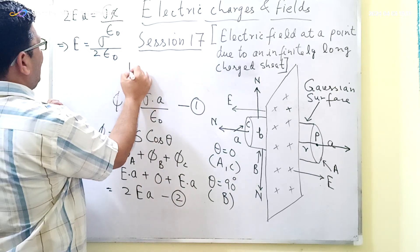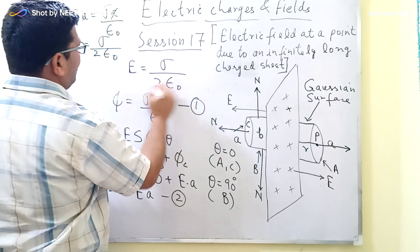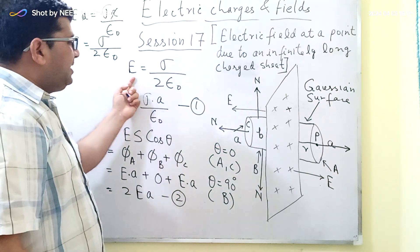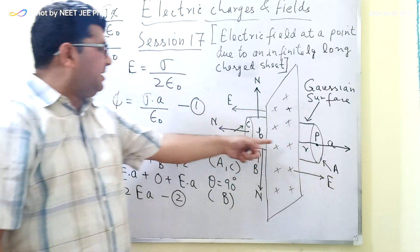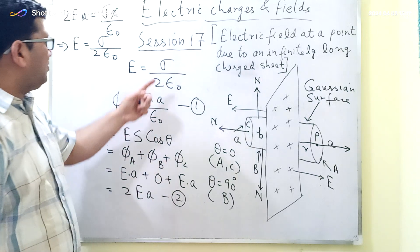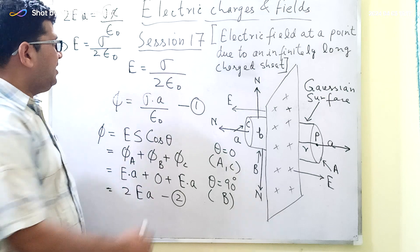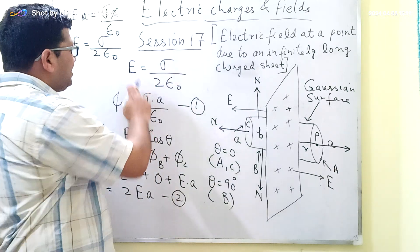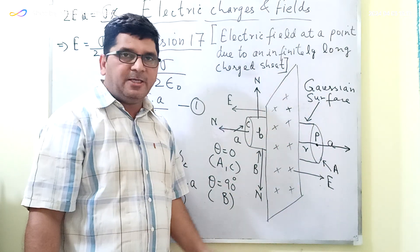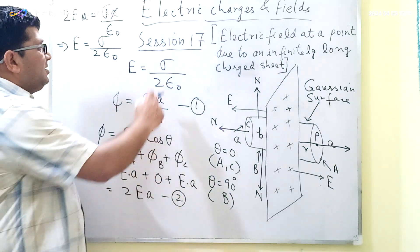So the value of E equals Sigma upon 2 epsilon-naught. We can see that the intensity of the electric field at any point due to this infinitely long charge sheet is totally dependent on the surface charge density Sigma. If the surface charge density is increased, then the electric field intensity at any randomly chosen point near this infinitely long charge sheet will also increase.